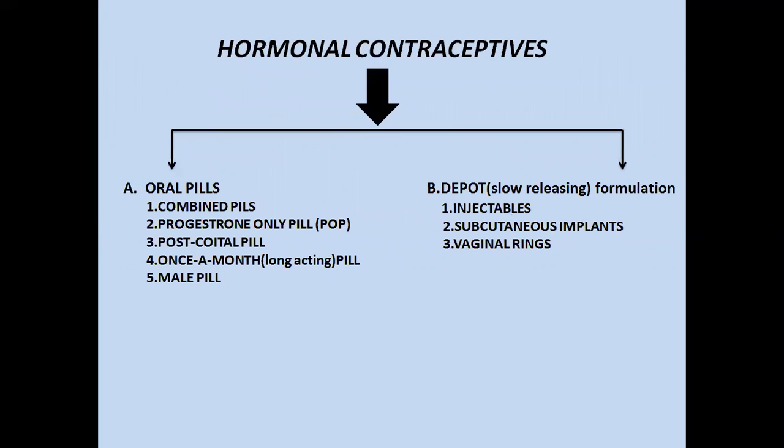Hormonal contraceptive methods are classified into mainly two types. The first one is oral pills and the second one is depot formulations. Depot formulations are slow-release hormones which are implanted and act for long durations.